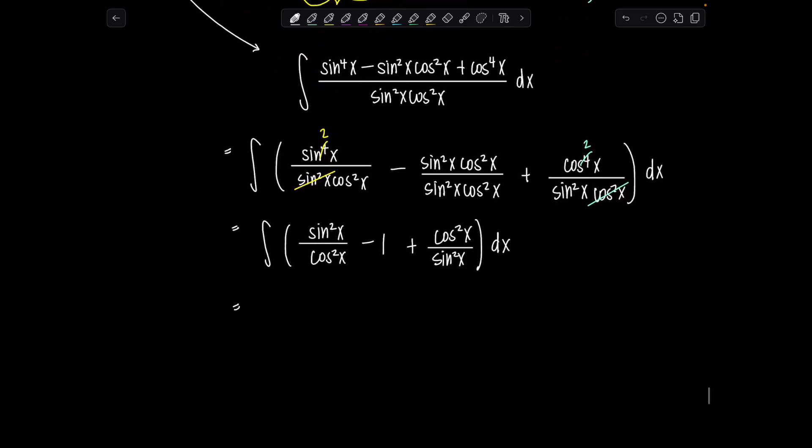Now what do we do? So we've got the integral of tan²x minus one plus its cousin, cot²x dx. Do we know the antiderivative of tan² or cot²? No.